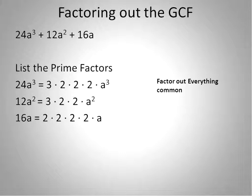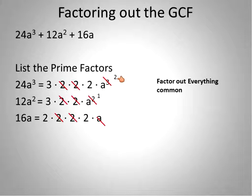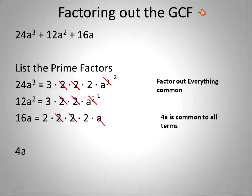The next step is to factor out everything that is common between these three terms. Just like factoring binomials where we looked for common factors, we're going to do the same thing — it just has to be common in every single term. There are two 2's in each of these, and there's also at least one a in each term. We had a to the power of 3, reduced to a squared; a squared reduced to a to the power of 1; and a single a cancels out completely. So 4a is common to all terms — that is our greatest common factor.